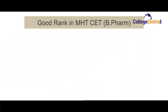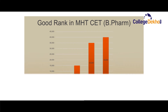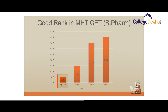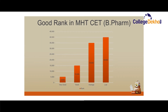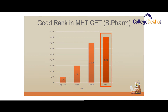Now let us know what is a good rank in MHT CET for B.Pharma admission. For B.Pharma admission, a rank of 1 to 5,000 can be considered a very good rank. A rank between 5,000 to 15,000 can be considered a good rank. A rank of 15,000 to 35,000 can be considered an average rank, and a rank above 40,000 can be considered a low rank.